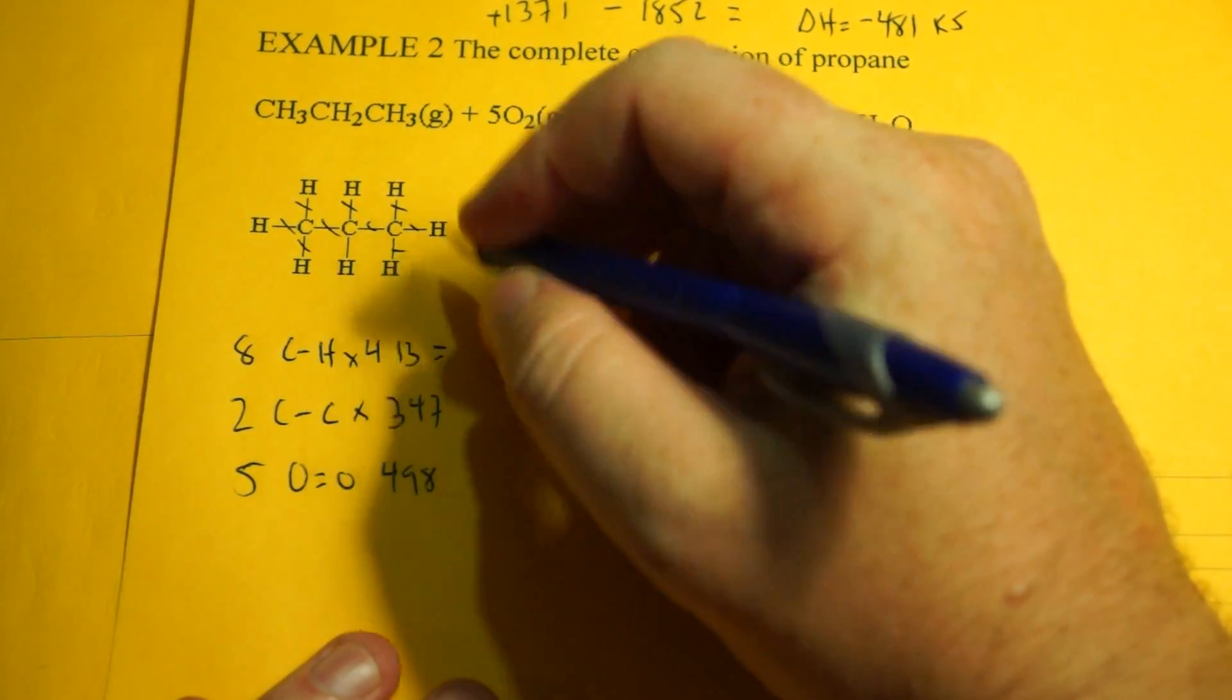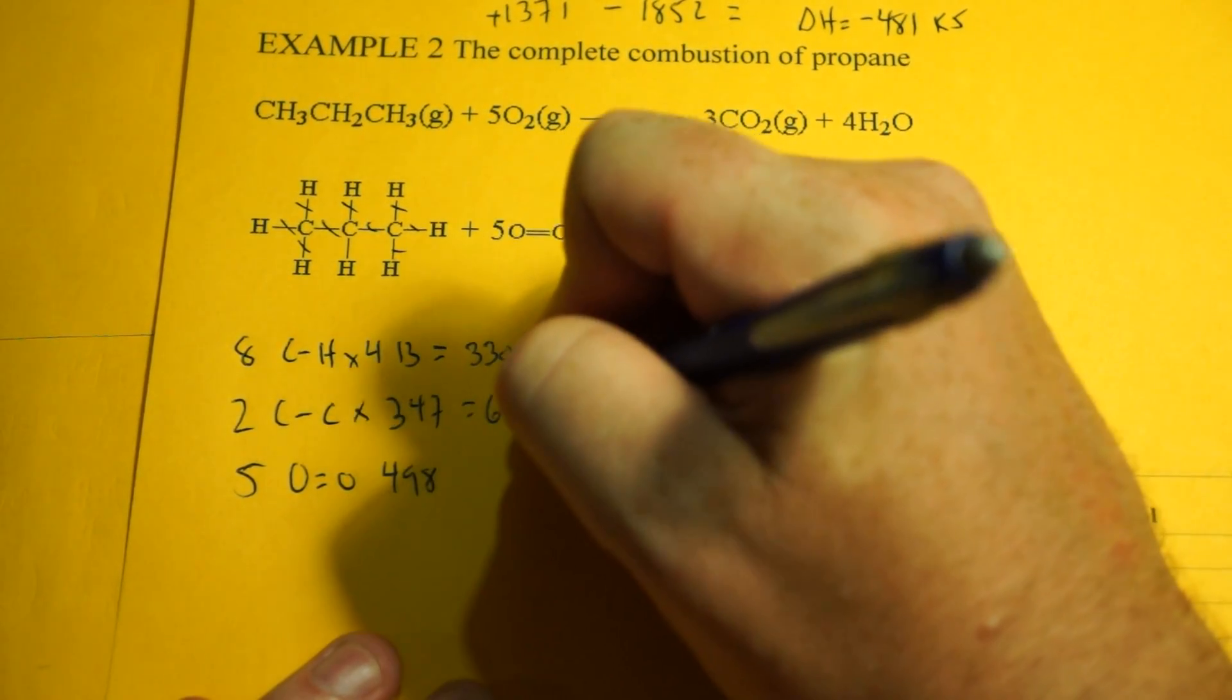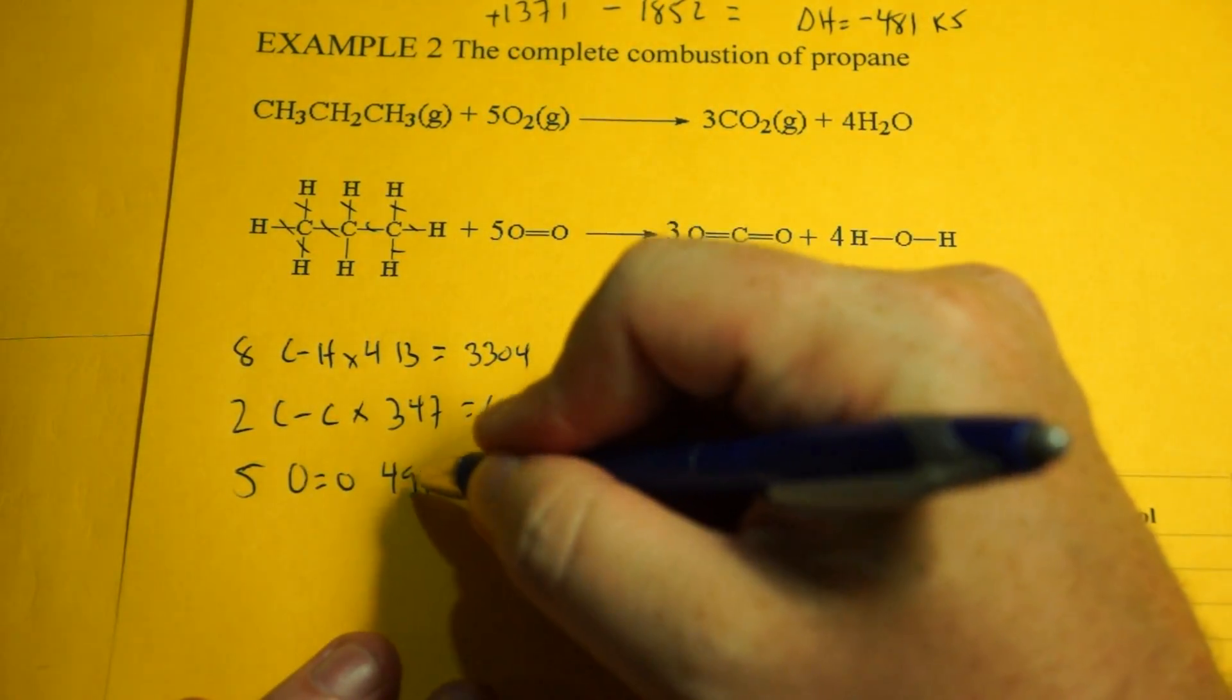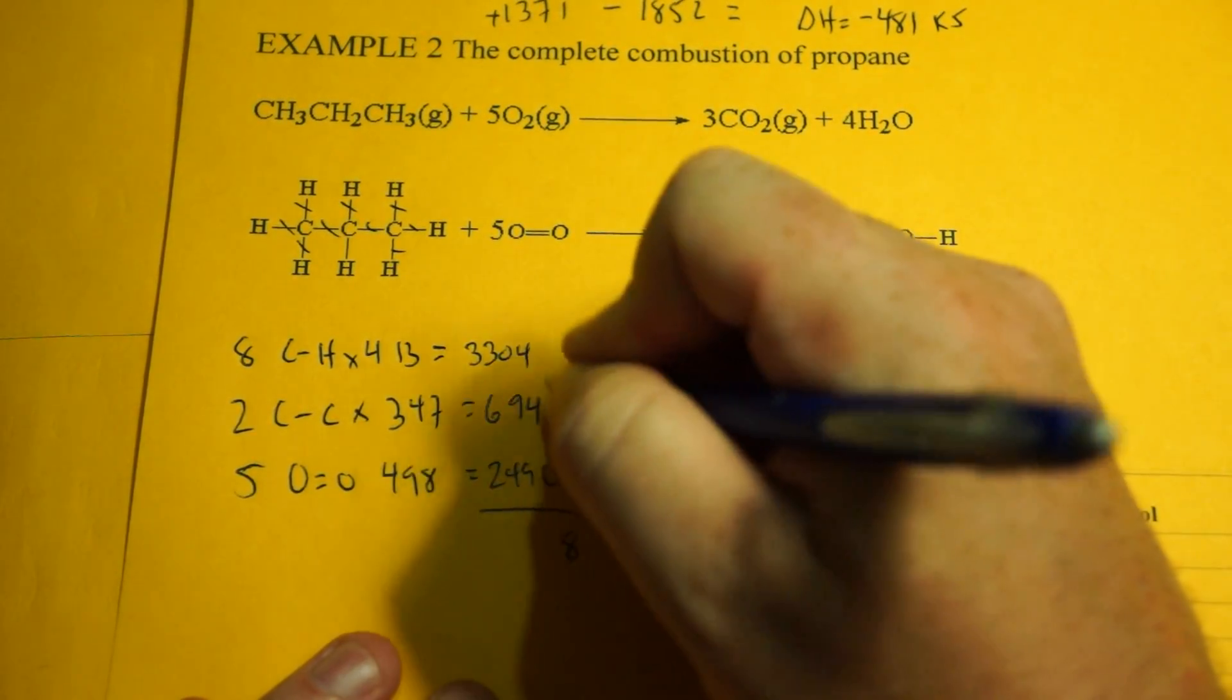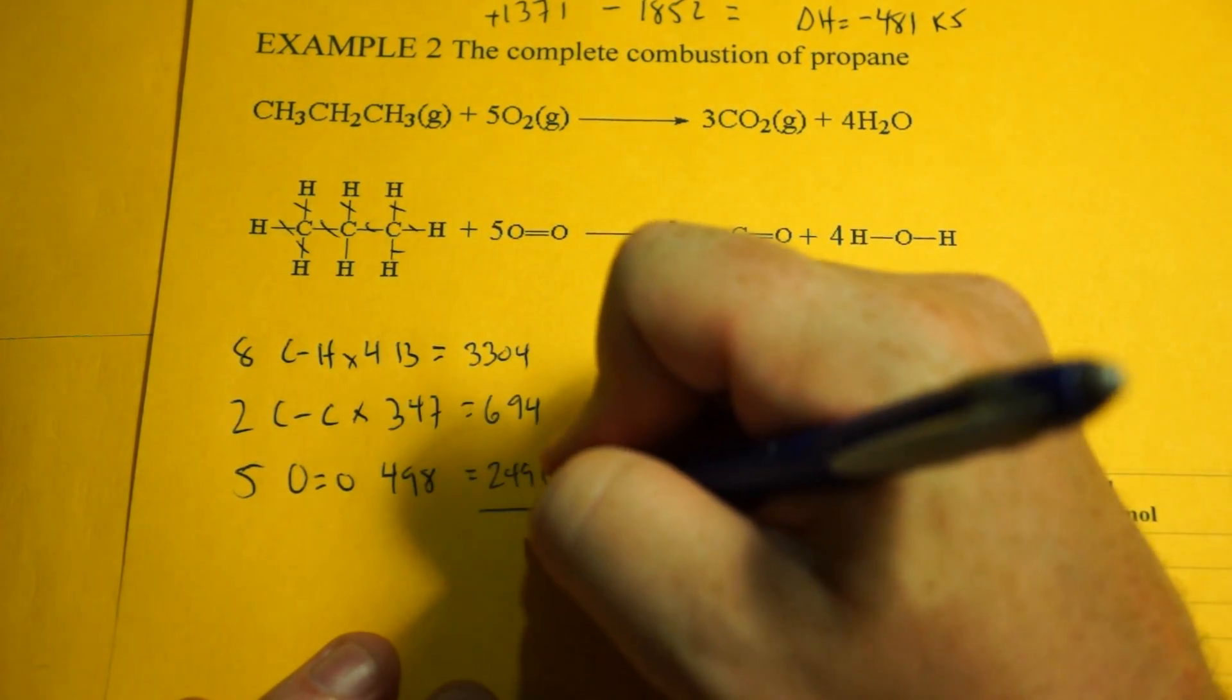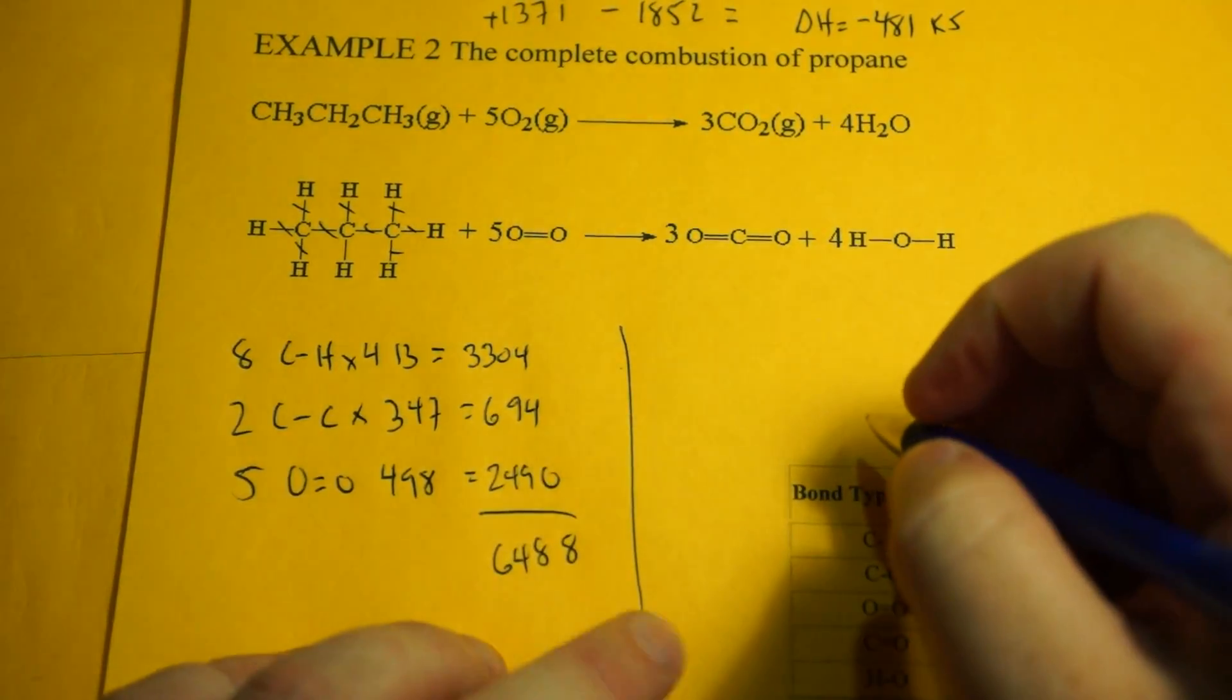So 8 times 413, what is that? 3,304. And 2 times 347 is 694. And 5 times 498, well 2,500 minus 10 is 2,490. And then we add that up. We get 6,488 for the breaking side.